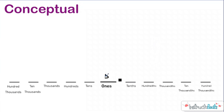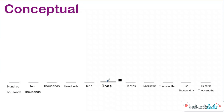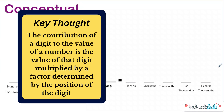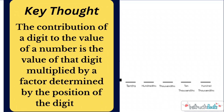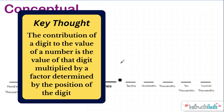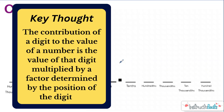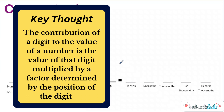For instance, if I put a 5 in the ones place, that would just be worth 5. If I move that 5 to the hundreds place, then all of a sudden that digit is now worth 500. We actually have to put a 0 in the tens and a 0 in the ones. Which leads us to our key thought for the lesson — I'm going to present it in two different ways. The first way is using very precise mathcabulary: in the Hindu-Arabic number system, the contribution of a digit to the value of a number is the value of that digit multiplied by a factor determined by the position of the digit.